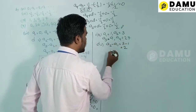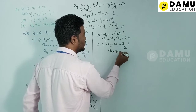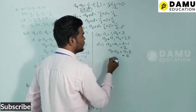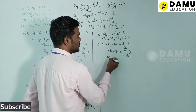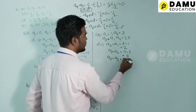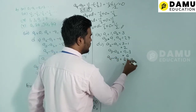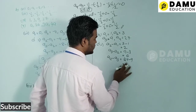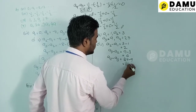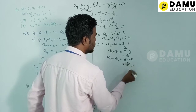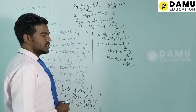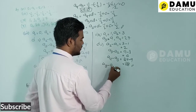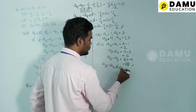Then a3 − a2 = 9 − 3 = 6. And a4 − a3 = 27 − 9 = 18. The differences are 2, 6, and 18.